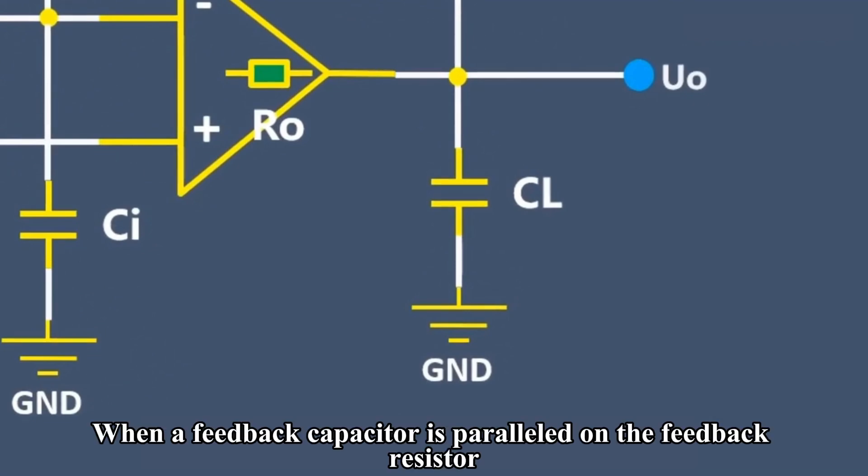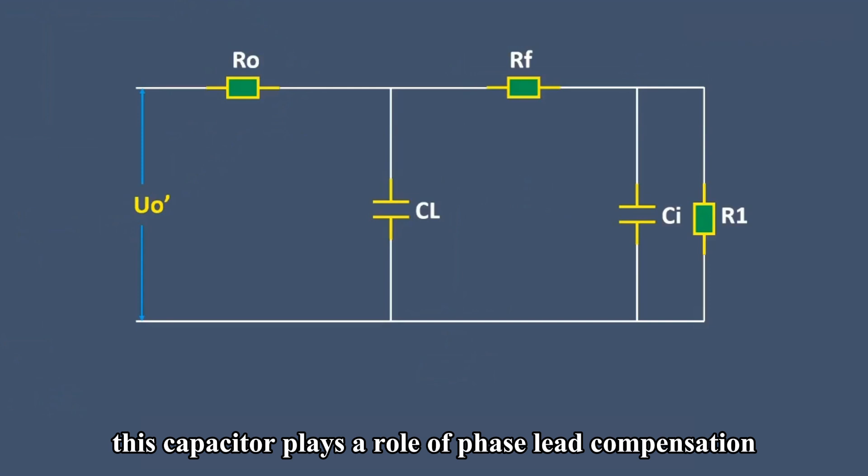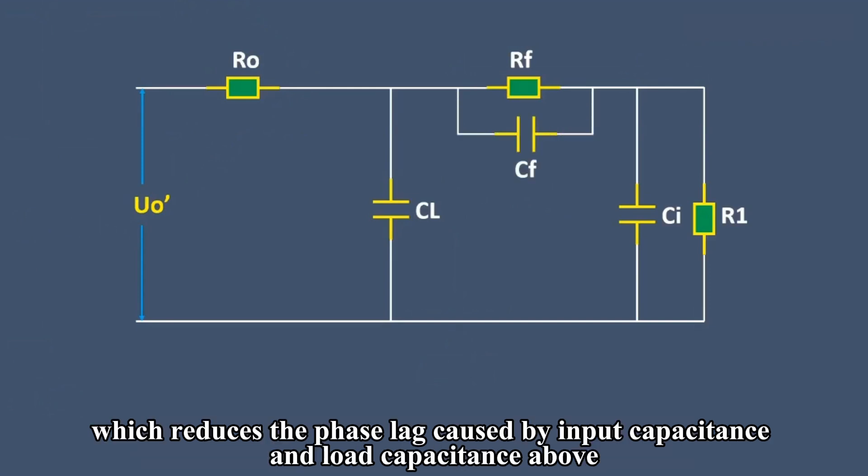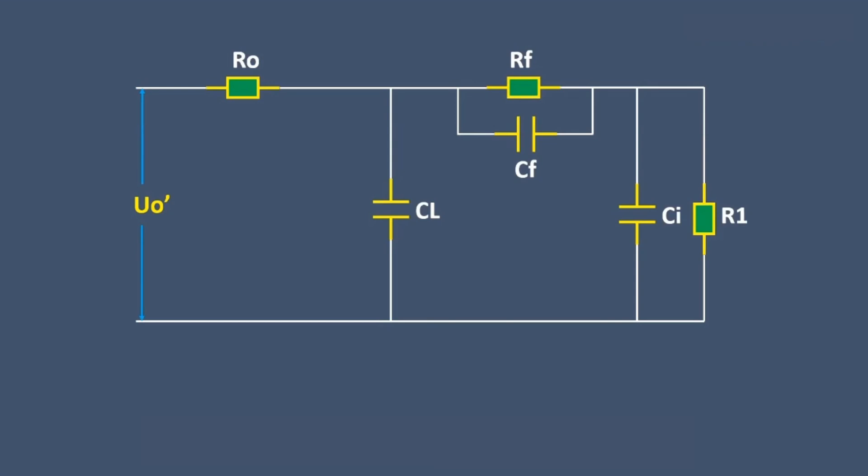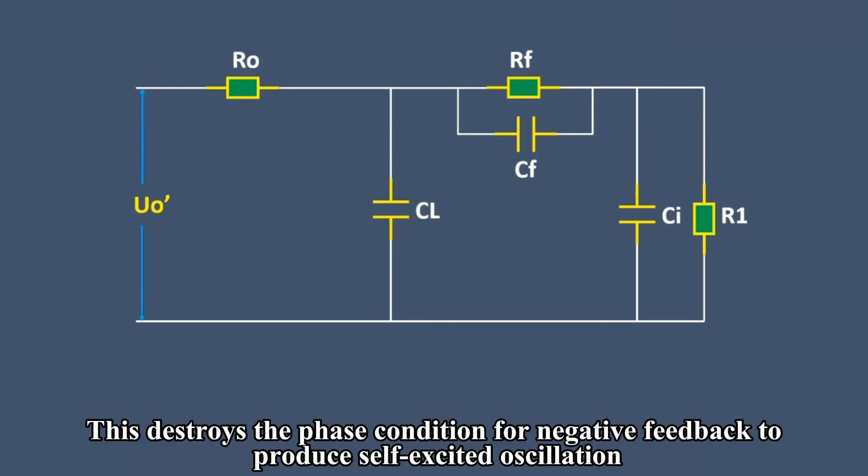When a feedback capacitor is paralleled on the feedback resistor, this capacitor plays a role of phase lead compensation, which reduces the phase lag caused by input capacitance and load capacitance. The phase difference of the feedback loop becomes less than 180 degrees. This destroys the phase condition for negative feedback to produce self-excited oscillation.